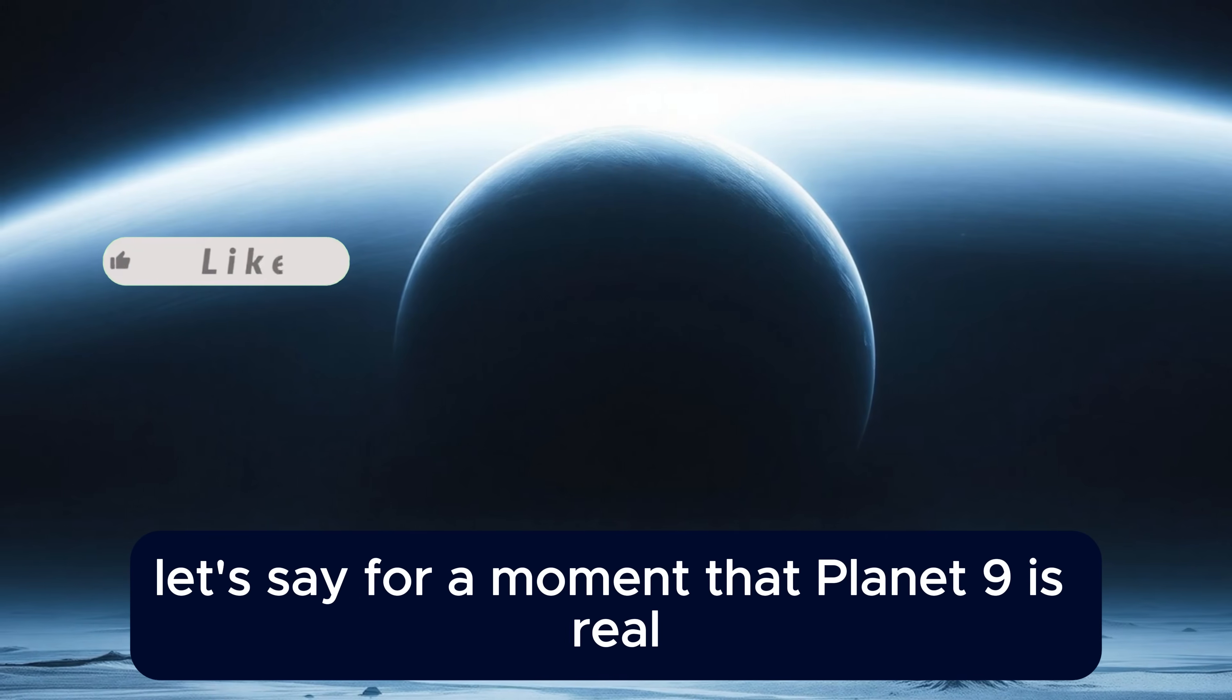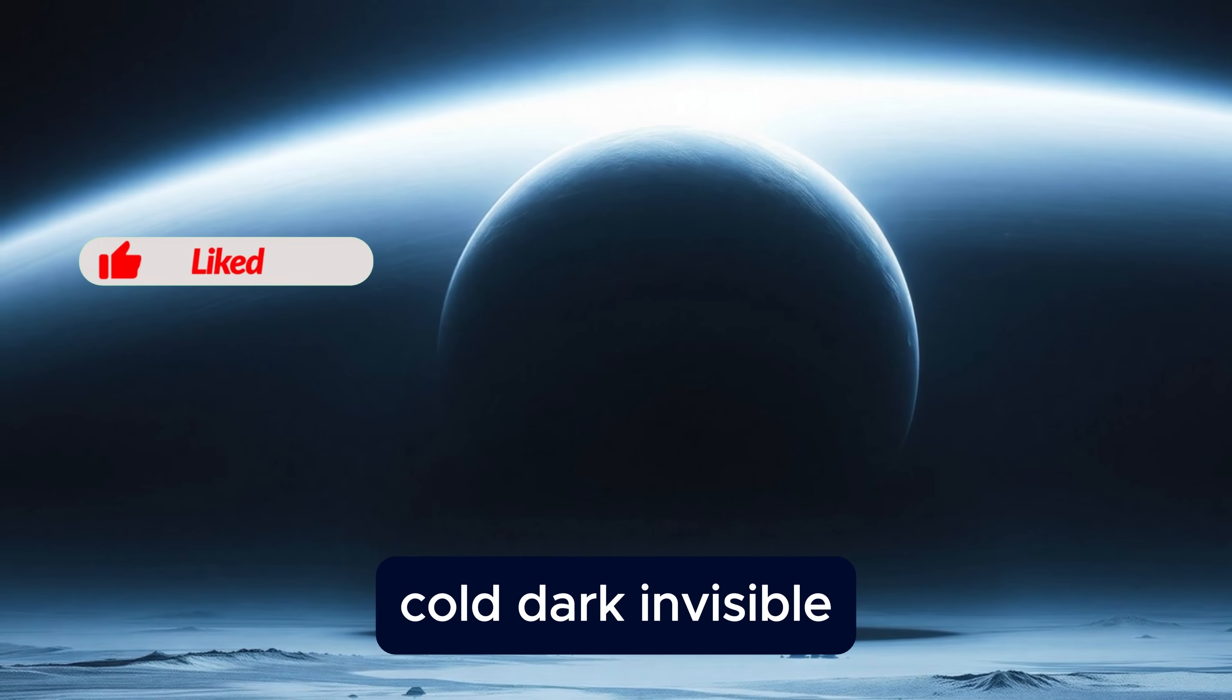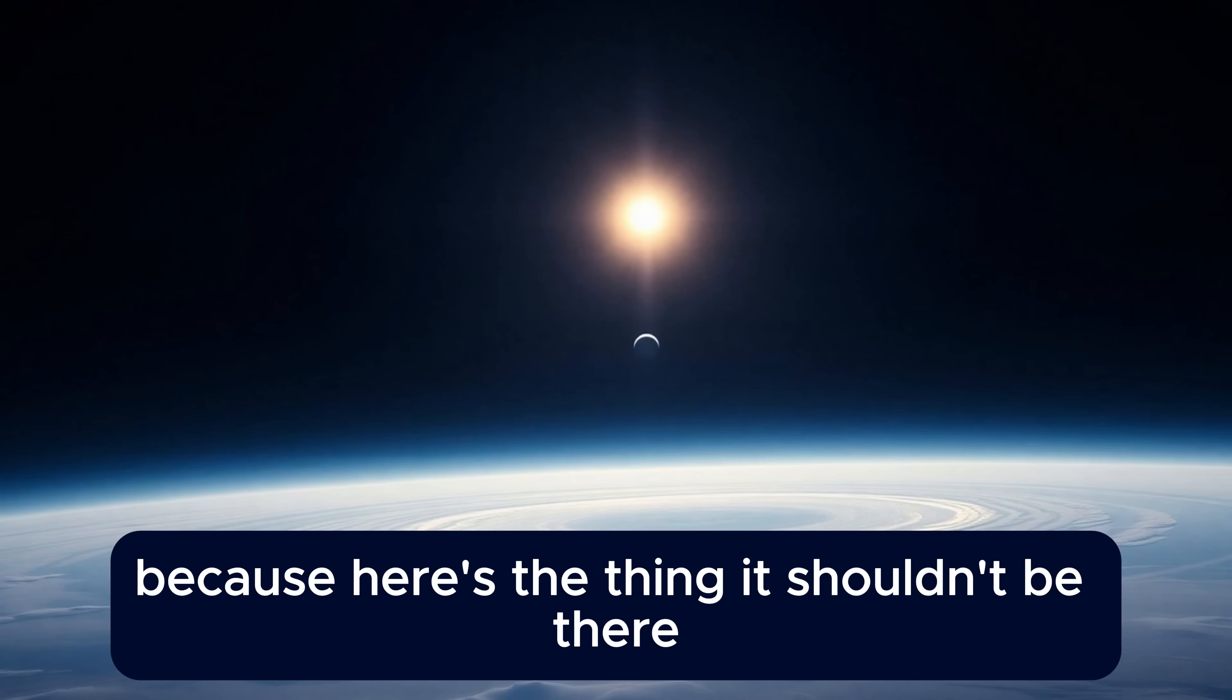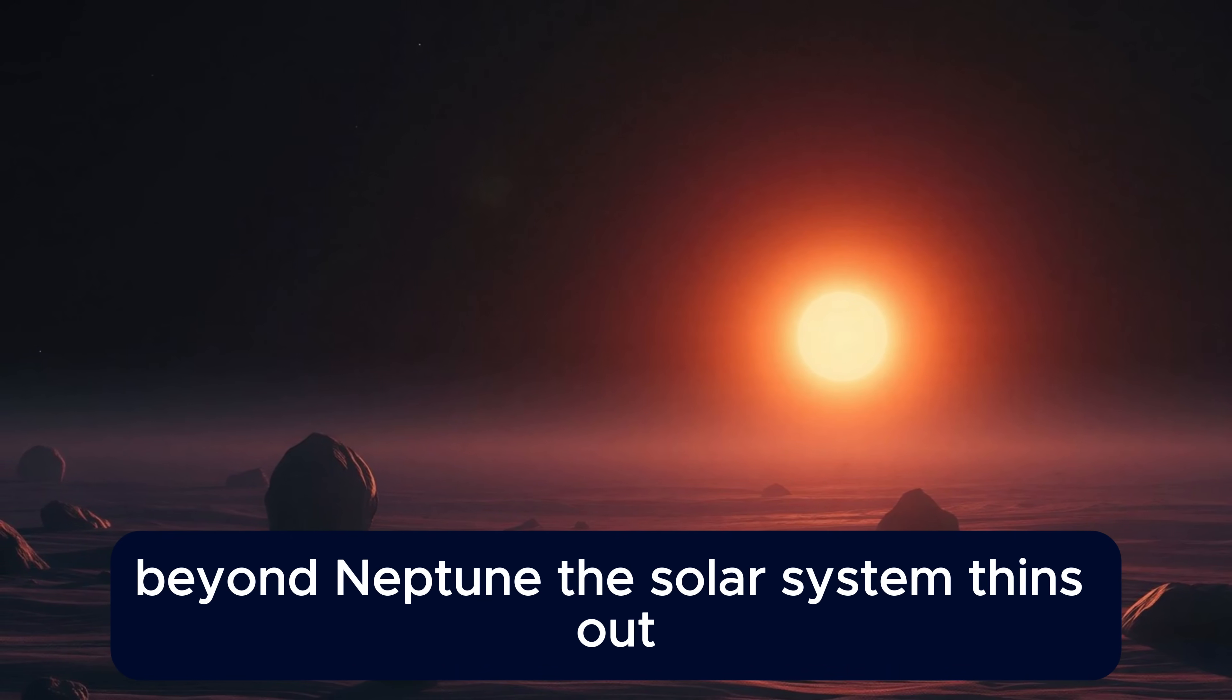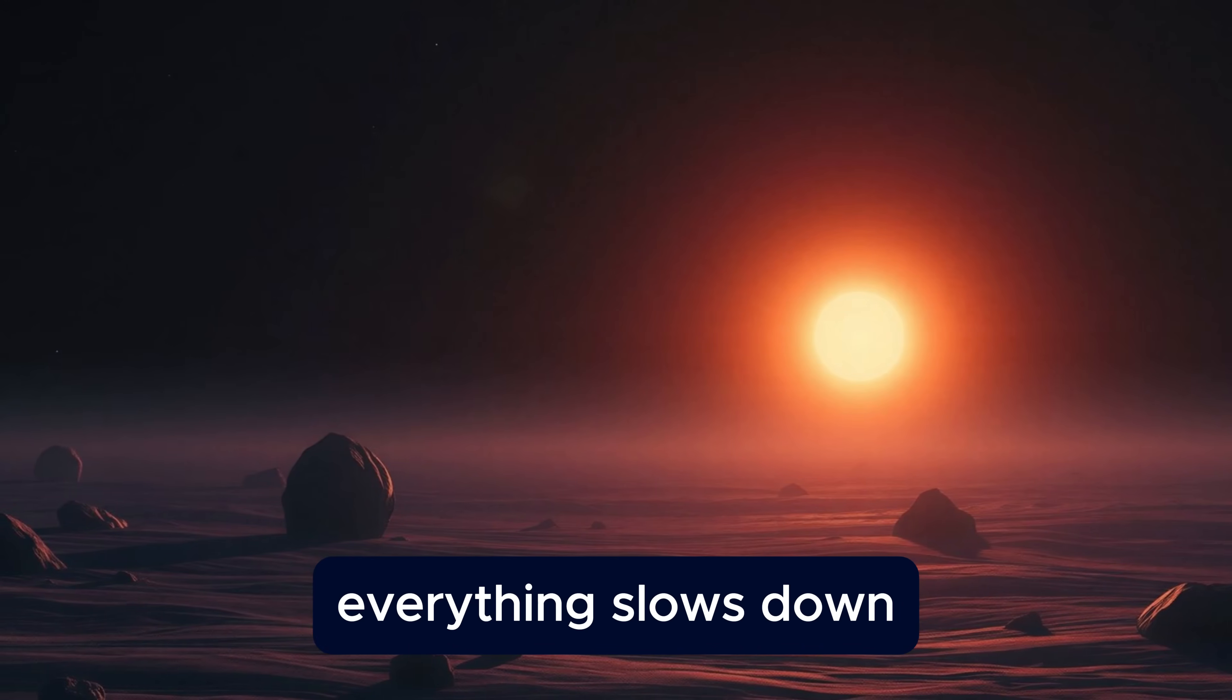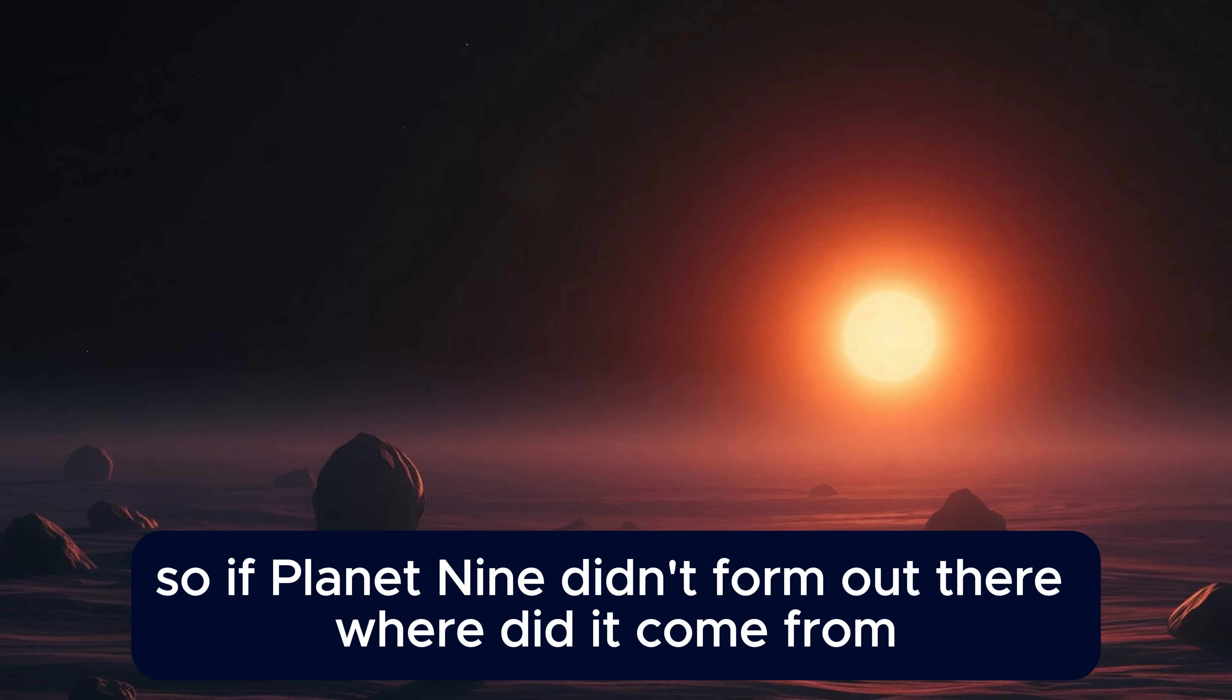Let's say for a moment that Planet 9 is real. That somewhere out there, hundreds of times farther from the sun than we are, there's a world five to ten times the mass of Earth. Cold, dark, invisible. The next question is obvious. How did it get there? Because here's the thing. It shouldn't be there. According to everything we know about how planets form, there simply wasn't enough material that far out to build something so massive. Beyond Neptune, the solar system thins out. The disk of gas and dust gets weaker. Everything slows down. You might get icy rocks forming. You might get comets. But a full planet? That's hard to explain. So if Planet 9 didn't form out there, where did it come from?